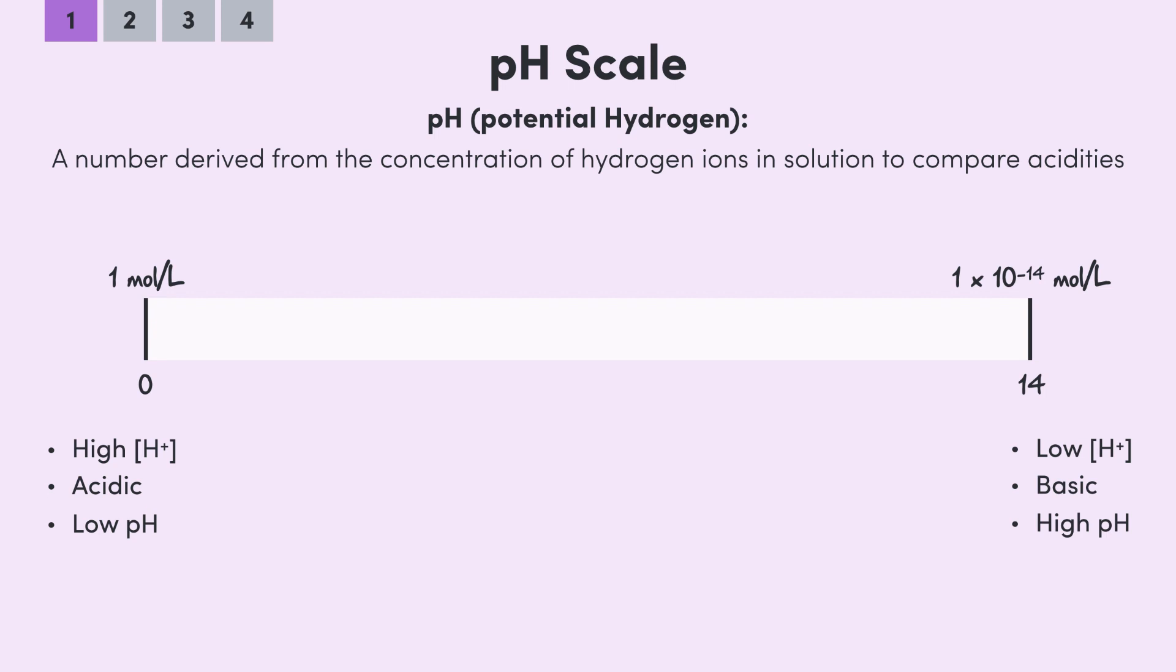But before you ask, yes the pH can be a negative number and it can go above 14. These are just the typically used endpoints. So smack bang in the middle is a pH of 7, which is considered neutral. So this is the pH of pure water. It's neither acidic nor basic.